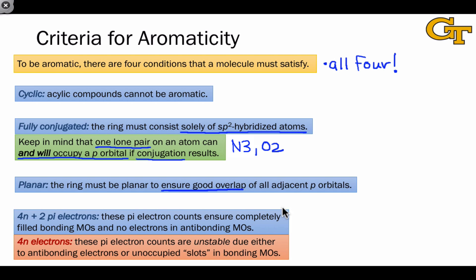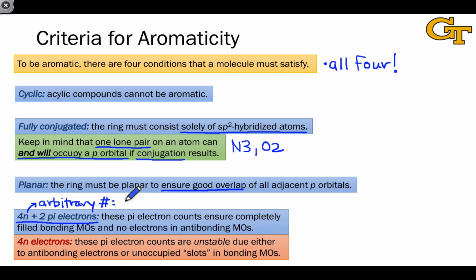Finally, there's probably the most cryptic criterion of all, which has to do with the number of pi electrons in the molecule. Structures that have 4N plus 2 pi electrons are aromatic. The value of N is often a source of confusion — it's just an arbitrary counting number that shows us the allowed numbers of electrons. It's either 0, 1, 2, 3, etc. The allowed numbers of pi electrons in an aromatic system are 2 when N equals 0, 6 when N equals 1, 10 when N equals 2, 14 when N equals 3, and so on.